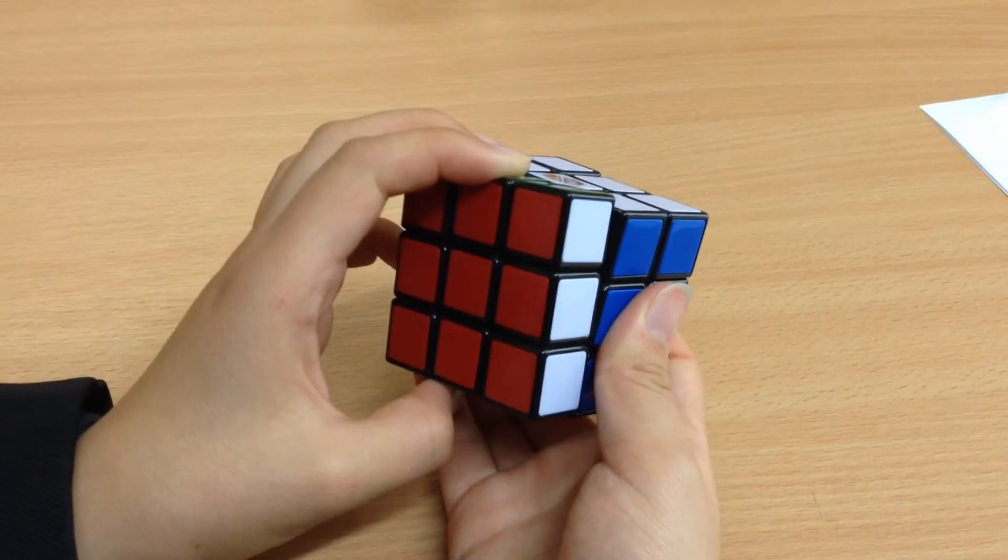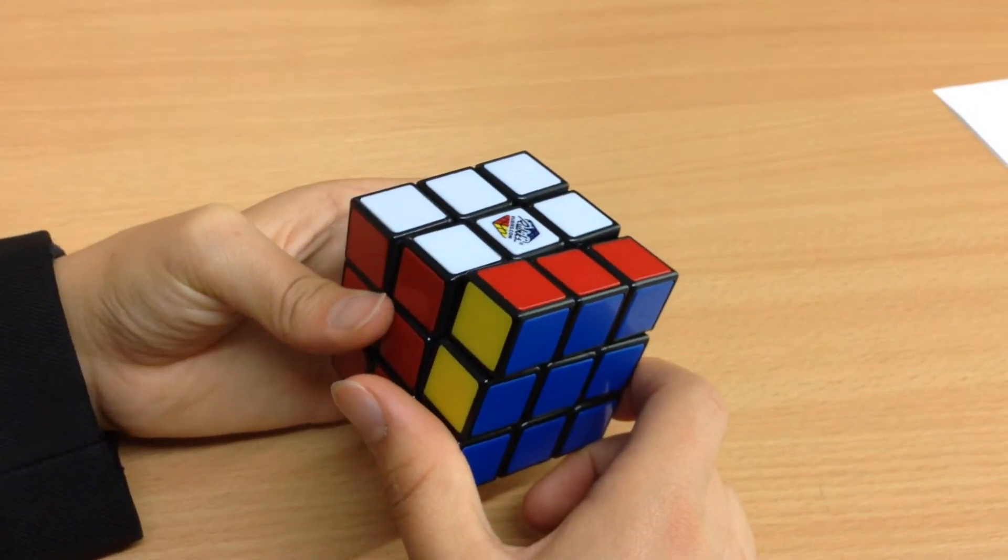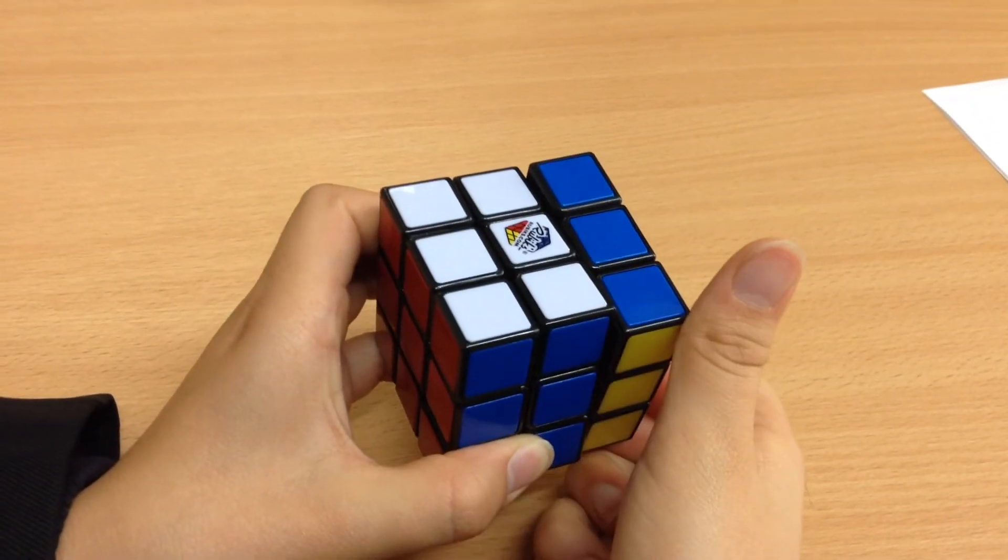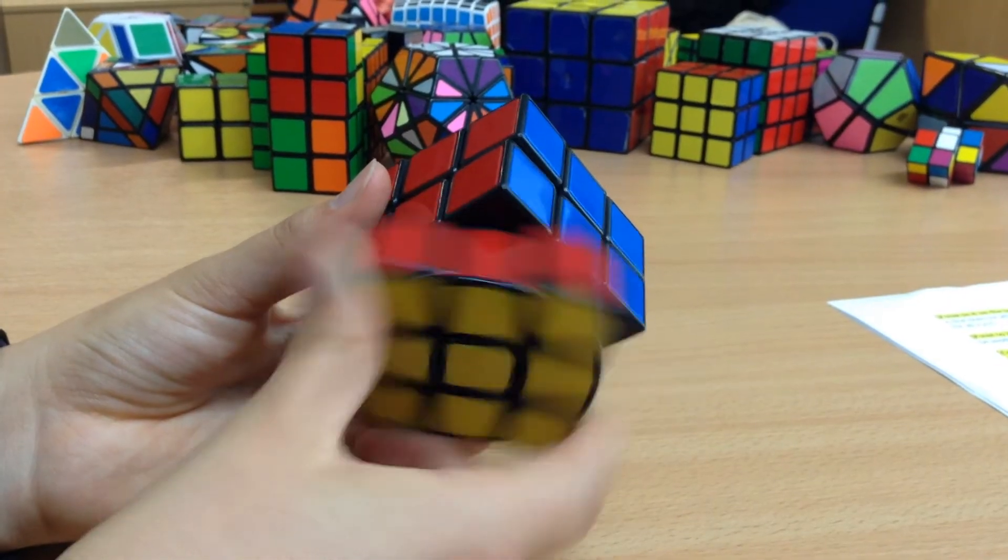The six fundamental moves are left clockwise, front clockwise, right clockwise, back clockwise, up clockwise, and down clockwise.